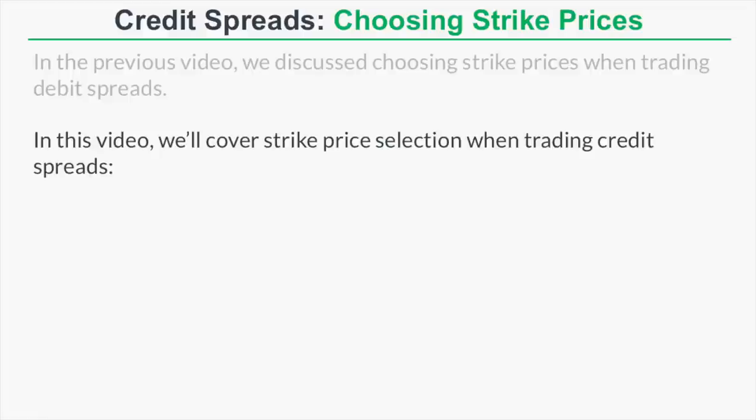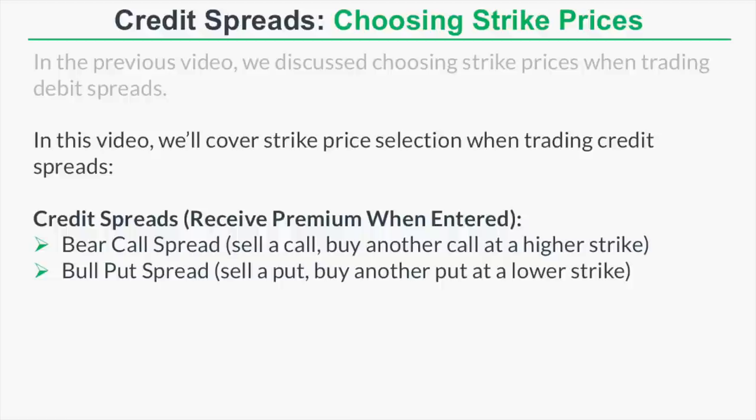To quickly recap, the two credit spread strategies among the four vertical spread strategies are the bear call spread and the bull put spread. These strategies are called credit spreads because you receive option premium when you enter the trade. The bear call spread consists of selling a call option and buying another call option at a higher strike price, while the bull put spread consists of selling a put option and buying another put option at a lower strike price.